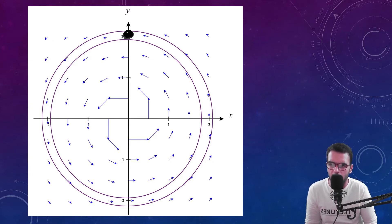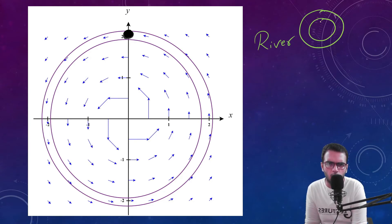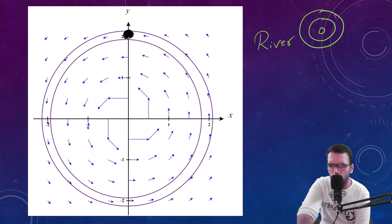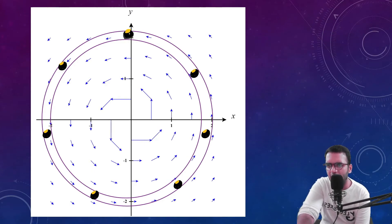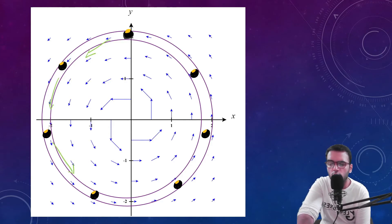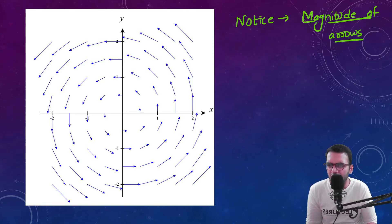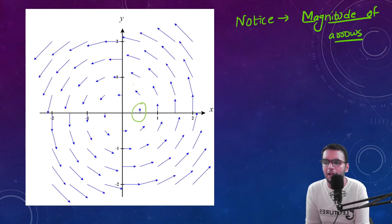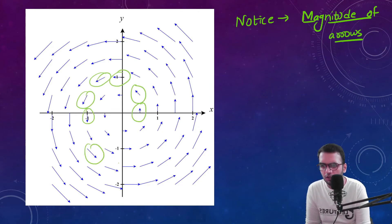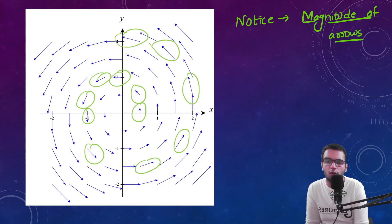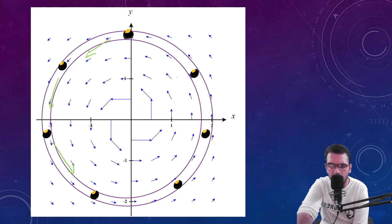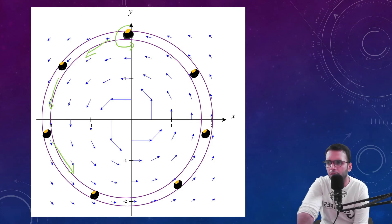For example, if you place a metal disc in this vector field where a river is swirling in concentric circles, and you color one point on the disc, you will find that even though the disc moves along with the river, it does not rotate about its own axis — the yellow point stays in the same relative position. That is why the curl was zero. Now in this other graph, notice that the magnitudes of the arrows are increasing constantly on any concentric circle, so if you place an object here it will rotate about its own axis — and yes, the curl of this equation exists.